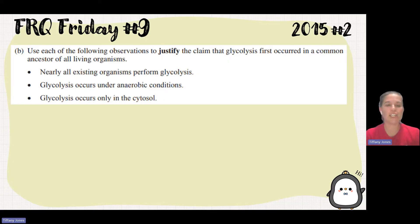This kind of moves into a little evolutionary aspect. Using those different observations, they're giving you observations, you have to justify the claim that glycolysis first occurred in a common ancestor. We have a common ancestor, this common ancestor underwent glycolysis, and that's why we're seeing that all organisms have glycolysis. The first claim is that nearly all existing organisms perform glycolysis.